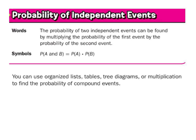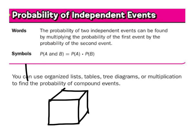So this probability of independent events stuff — they'll give you a couple of situations and you've got to find the probability of something happening. For example, they might say: what's the probability that you roll a 6 on this number cube? But then in addition to that, they're going to add something else, like a coin.